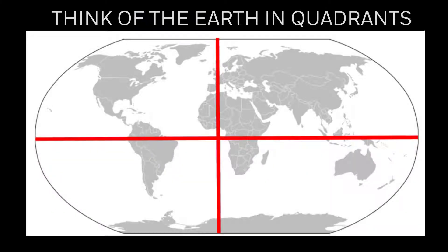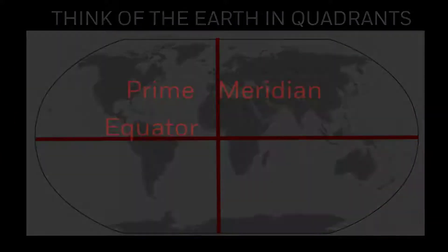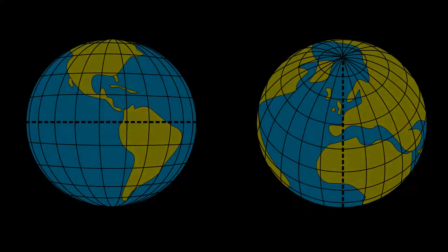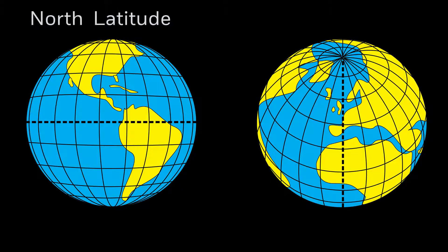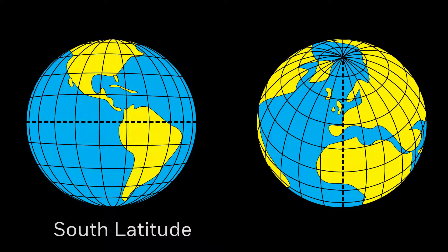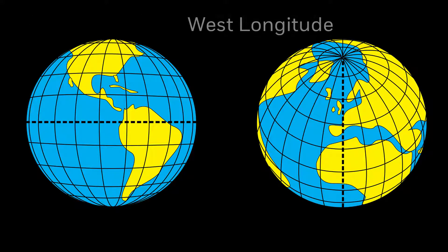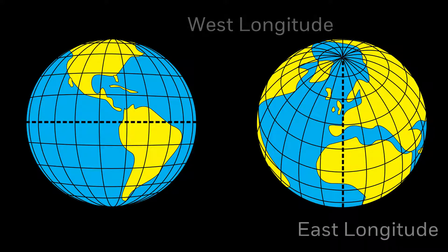To begin, picture the Earth divided into quadrants based on the equator and the prime meridian. Any point north of the equator can be referenced as north latitude and south of the equator as south latitude. The prime meridian works the same way, only in the vertical axis — west of the prime meridian becomes west longitude, and east becomes east longitude.